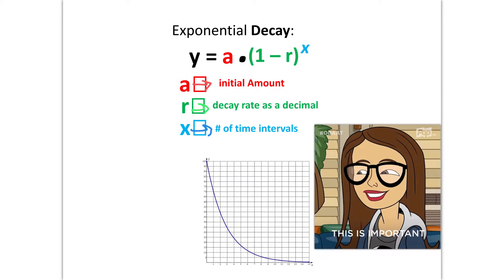The equation for exponential decay is y equals a times the quantity of 1 minus r to the x power. Remember, a is your initial amount, r is your decay rate, and x is the number of time intervals.